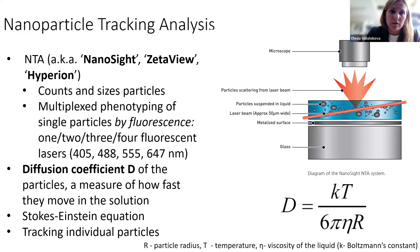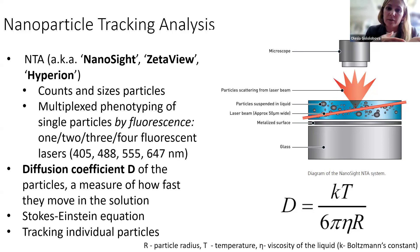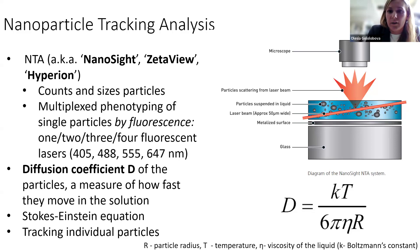All NTA instruments have a very similar principle — they can count and size particles, and recently can also use multiplex phenotyping by fluorescence. In NTA, we don't see the particles directly. We shine light on the liquid where particles are located and measure the scattered light. We can also track particles and determine their diffusion coefficient — how fast they move in the liquid — to estimate their sizes. Based on the Stokes-Einstein equation, the sizes of the particles may not be very accurate. Another important challenge is that NTA is usually based on a microscope, and because of the diffraction limit, it's hard to focus on different-sized particles simultaneously.